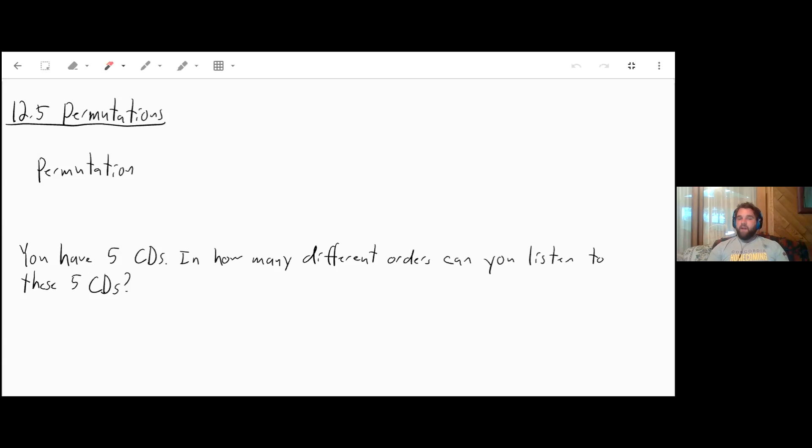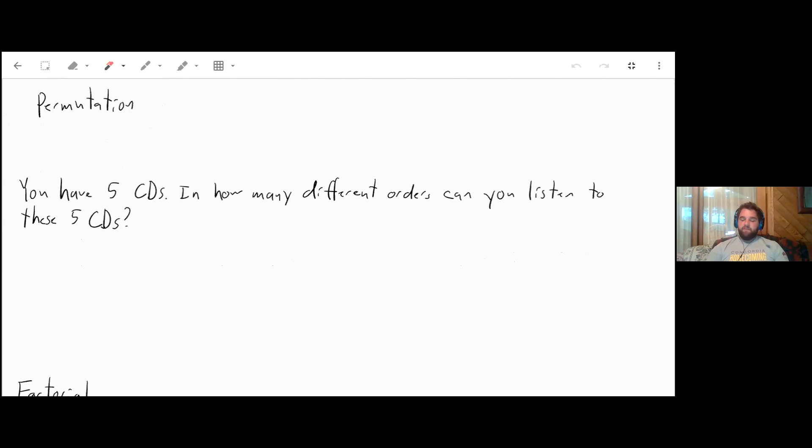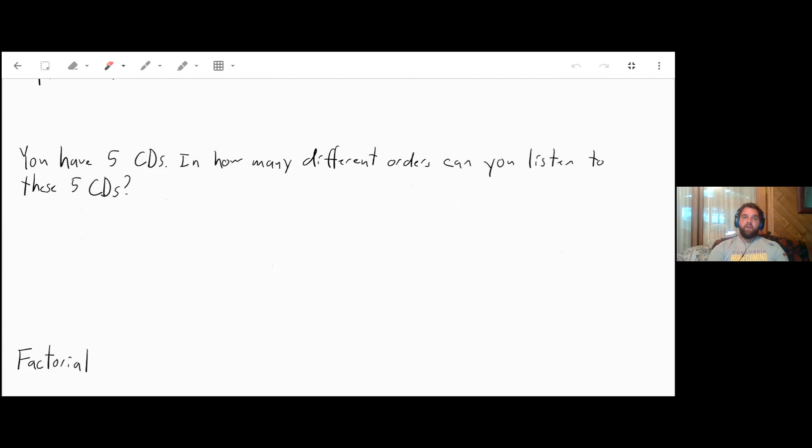So you have five CDs and how many different orders can you listen to these five CDs? Well even though this is a permutation problem, we can actually still solve this using the fundamental counting principle. So let's say you've got five CDs. How many options of CDs do you have to listen to first? Well you can choose from all five. So you have five options for the first one.